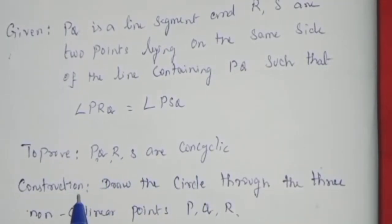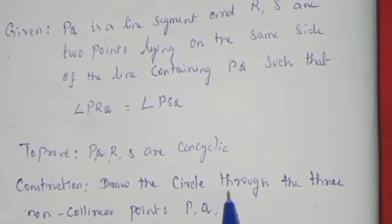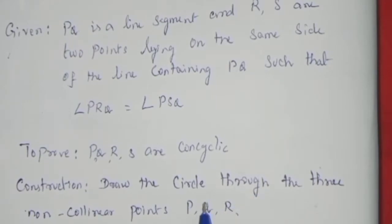In the construction, draw the circle through the 3 non-collinear points P, Q, R. First, we have 3 points. These 3 points lie on the circle.